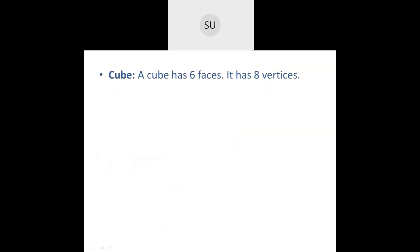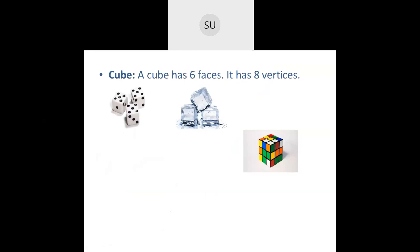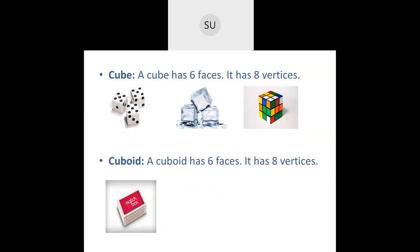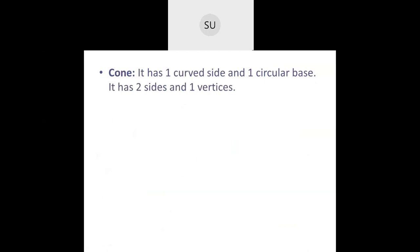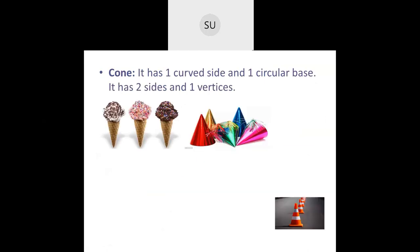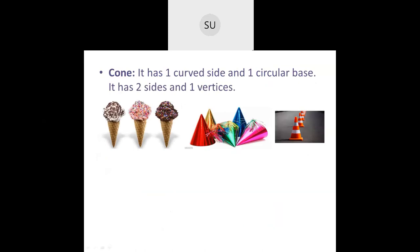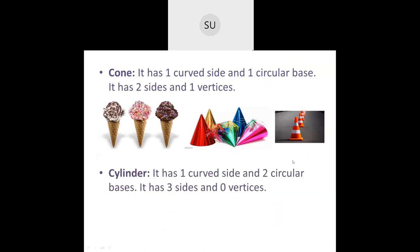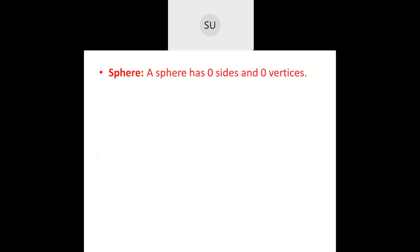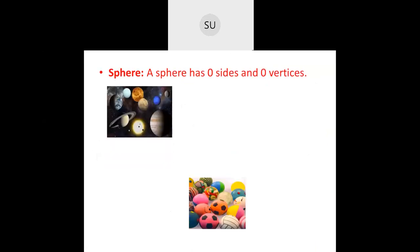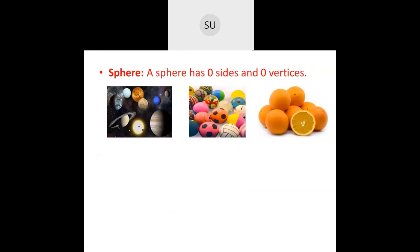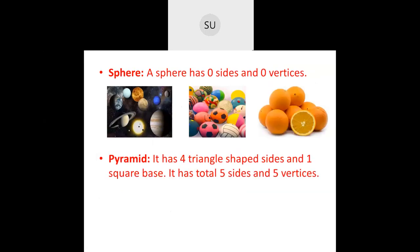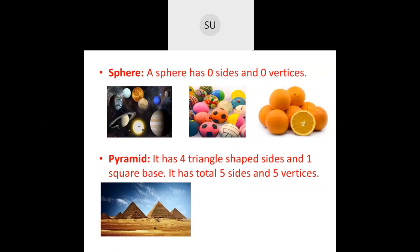We saw different examples of each solid shape. A cube: dice, ice, Rubik's cube. Cuboid: a matchbox, an aquarium, or a compass box. Cone: ice cream cones, birthday caps, and traffic cones. Cylinder: soft drink cans, tin cans, batteries, or gas cylinders. Sphere: different planets, balls, or oranges — these are all sphere in shape. Then we saw pyramids: examples are the pyramids of Egypt or a tent.